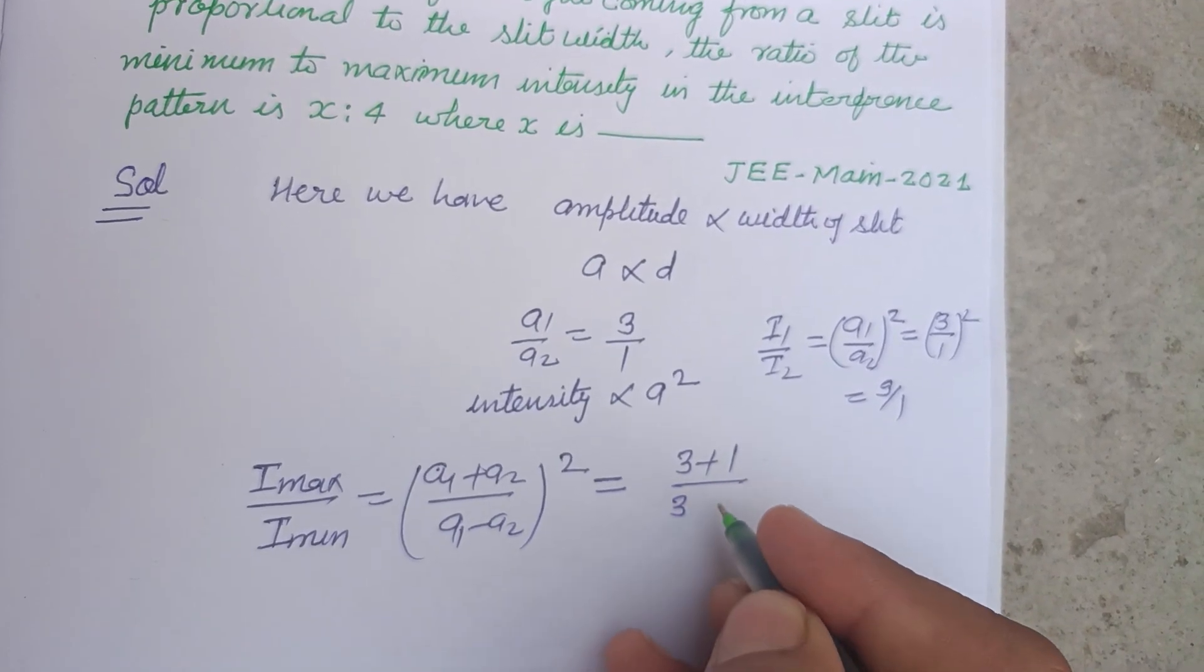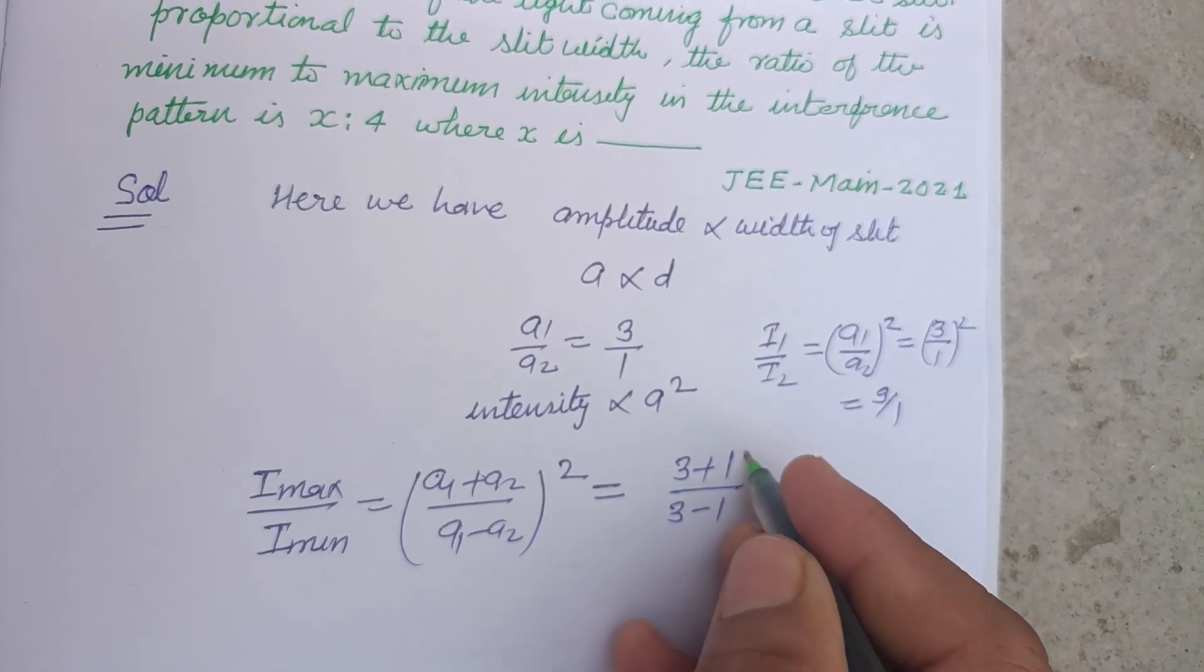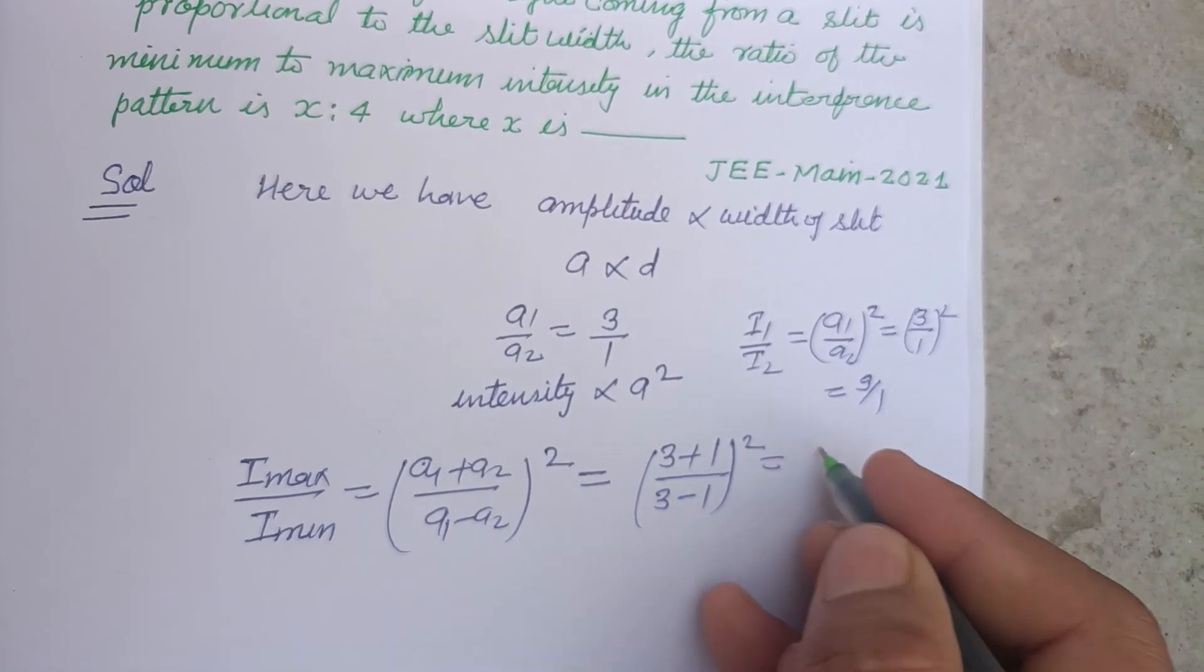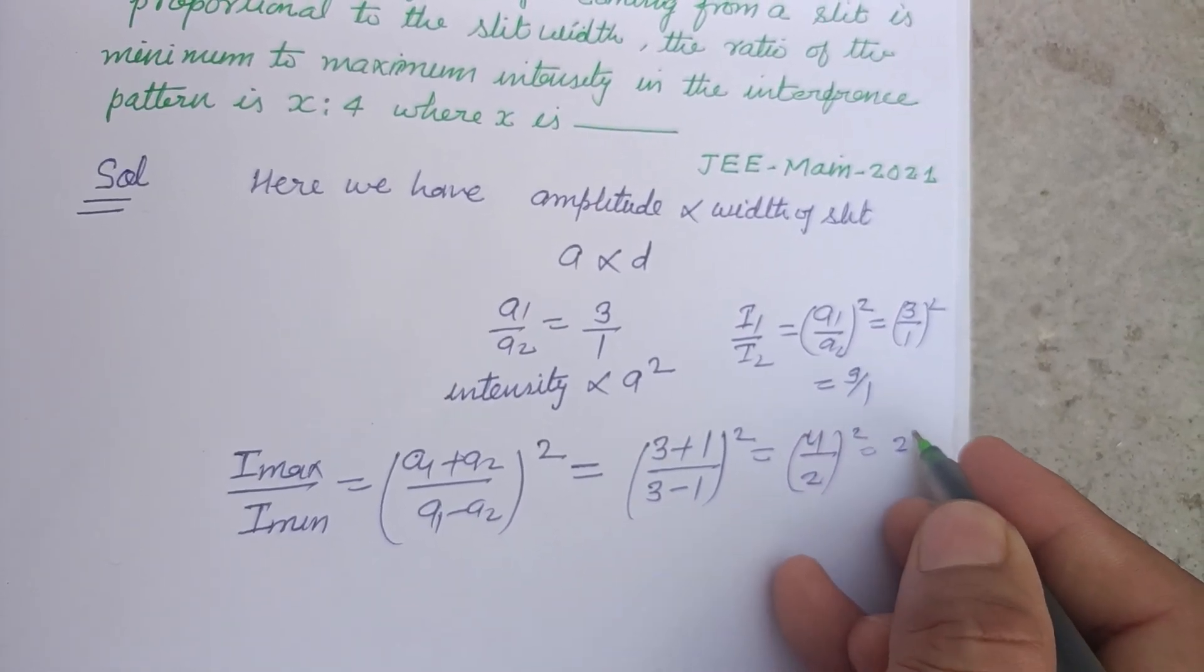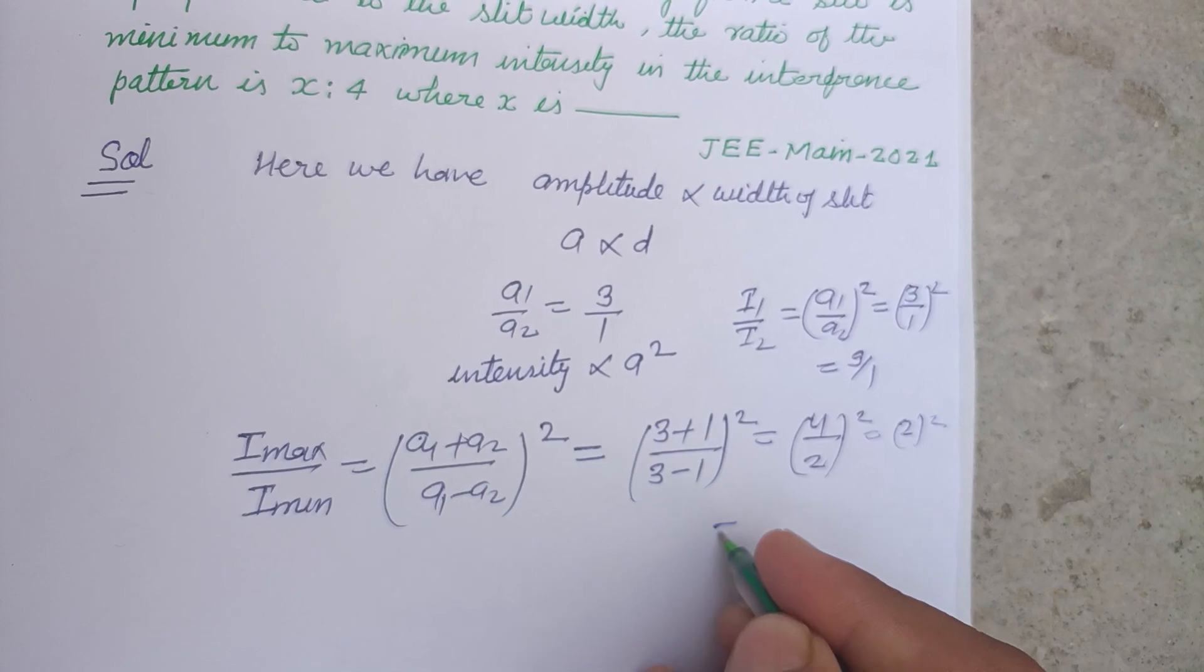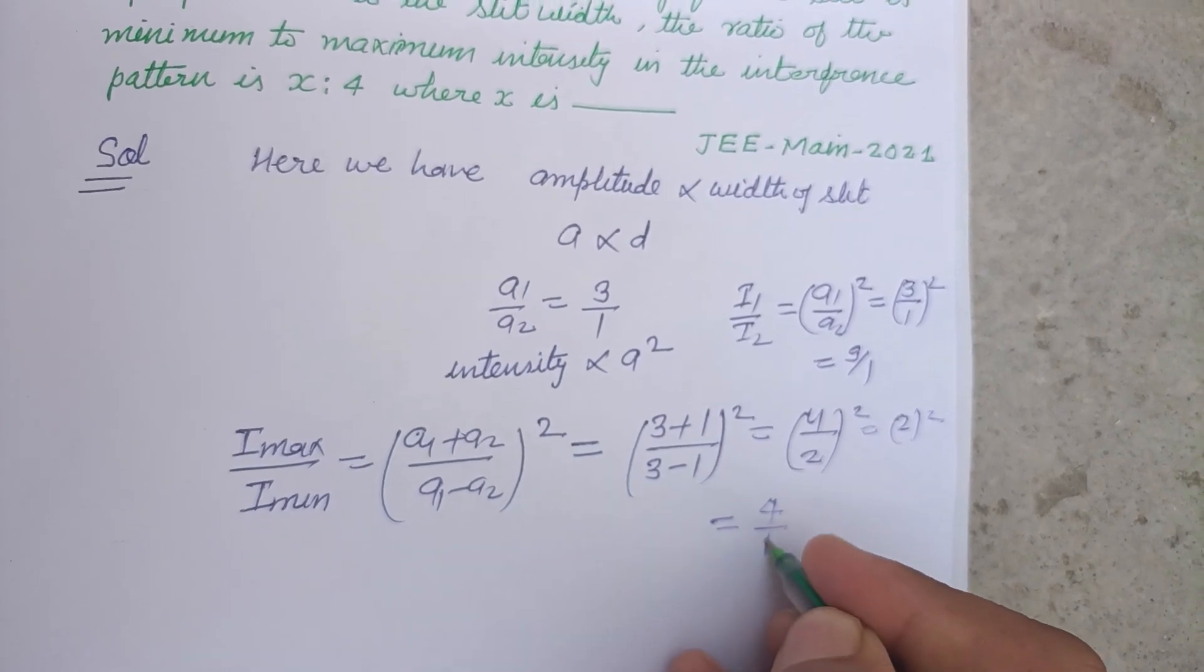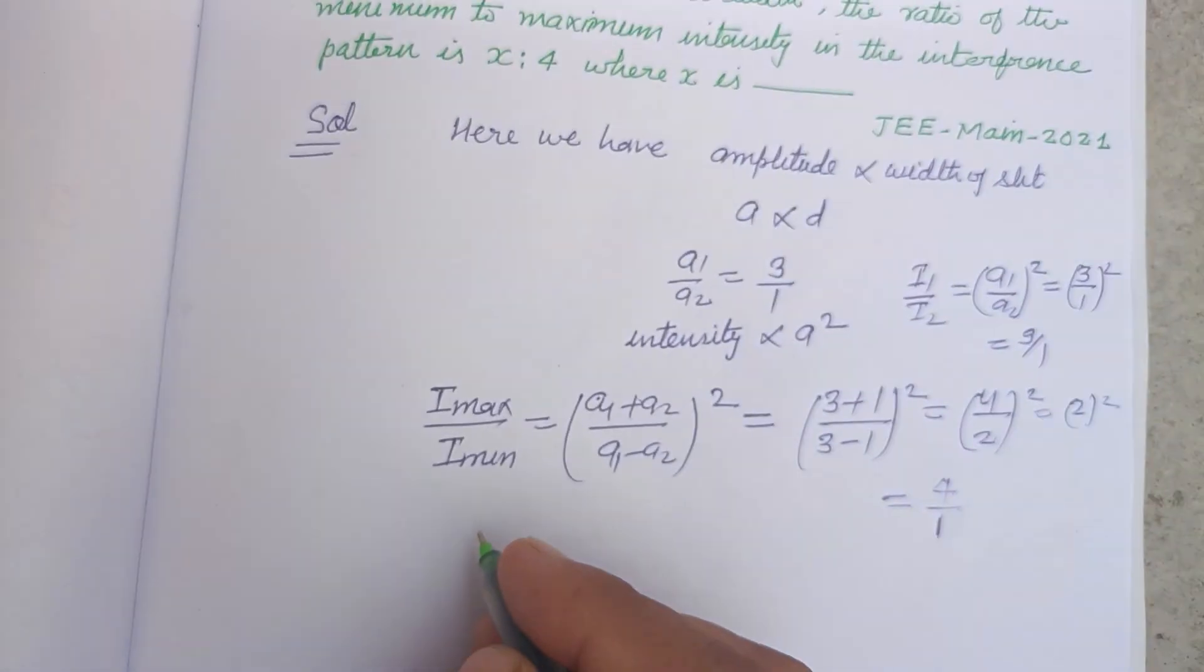So this is 3 plus 1 over 3 minus 1 whole square, which is 4 upon 2 whole square, so this is 2 square which is 4 upon 1.